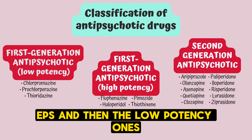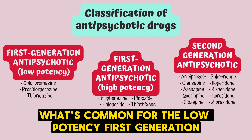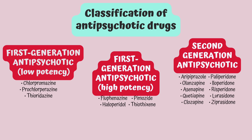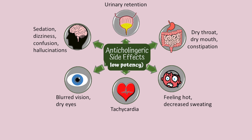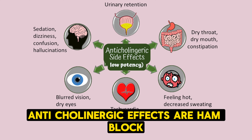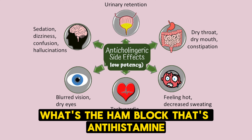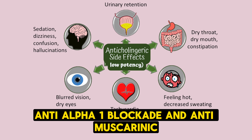And then the low-potency first-generation ones — what's common for them? Anticholinergic effects, or HAM block. What's the HAM block? That's antihistamine, anti-alpha-1 blockade, and antimuscarinic.